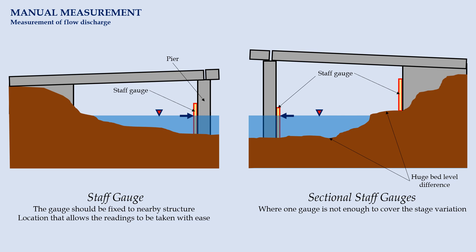Thus, staff gauges in this configuration are also called sectional gauges. The readings from gauges need to be taken at frequent intervals. Only then, we may define the variation of stage with time in an accurate manner.